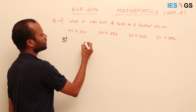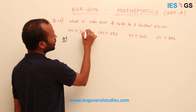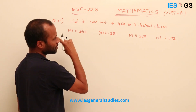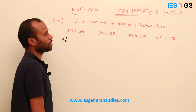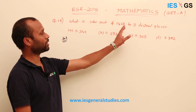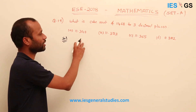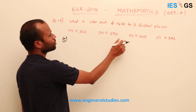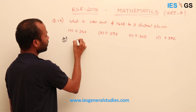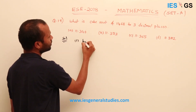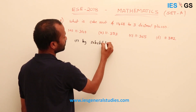In competitive exams, one approach is simply to cube each of the given options and find which result is closest to the given number. This substitution method works but typically requires a calculator. The other approach is substitution of the given options directly.